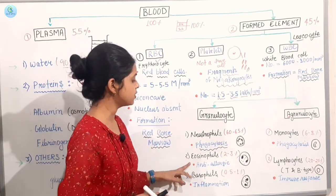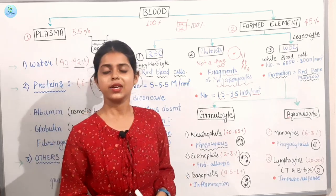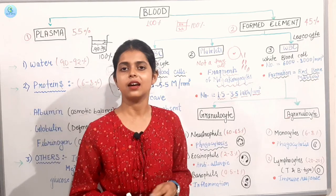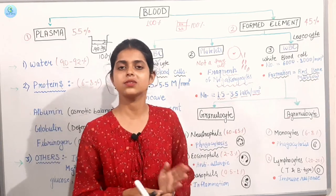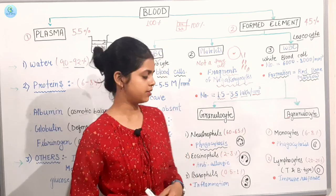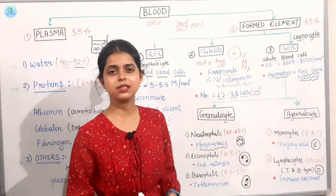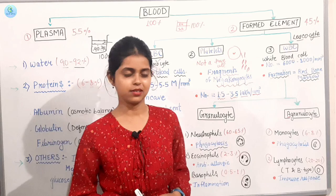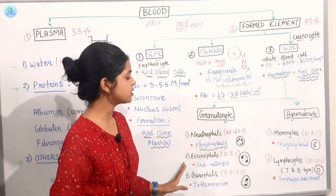Next, if you talk about eosinophils, it is anti-allergic. If you have an allergic reaction, it is against it. Third is basophils, which causes inflammation. So this is our granulocyte.